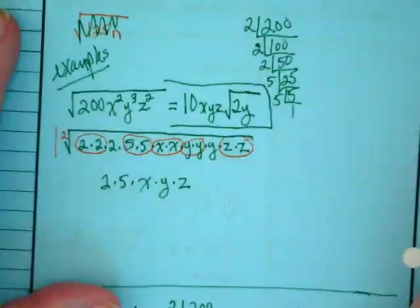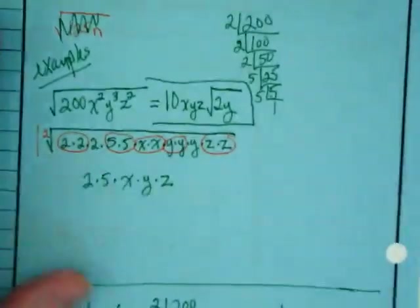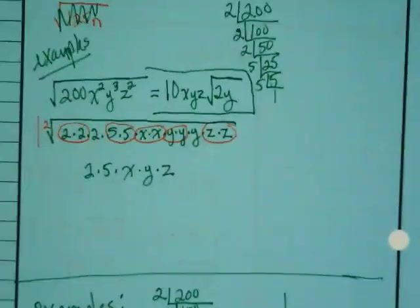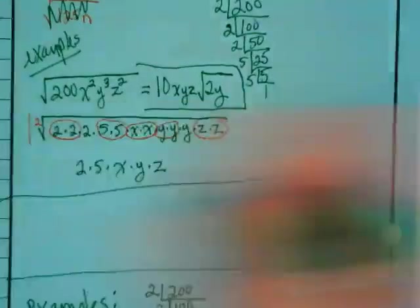The radical sign doesn't disappear because we didn't factor everything out. Who's looking really confused? Second period was too, but by the time they left they liked doing these. Trust me. You guys have actually been following these steps without knowing them. Let's do another example.